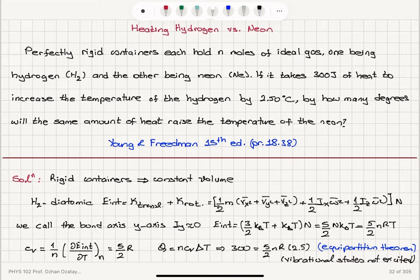So we've talked about heating hydrogen versus neon. These are perfectly rigid containers, same number of moles of ideal gas. One is hydrogen, in a separate container I have neon. It takes 300 joules of heat to increase temperature of hydrogen by 2.5 degrees C. For hydrogen, I have noted the internal energy has 3/2 kT contribution from translations, kT contribution from rotations, since one of the rotation axes gives 0 contribution, the moment of inertia is 0. 5/2 nRT is the internal energy, 5/2 R is the Cv, and remember Cp minus Cv is R, so the molar specific heat at constant pressure for this gas would be 7/2 R.